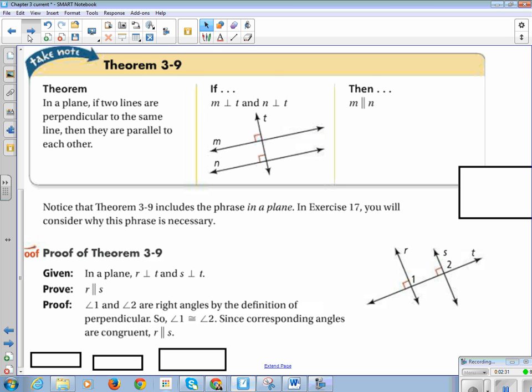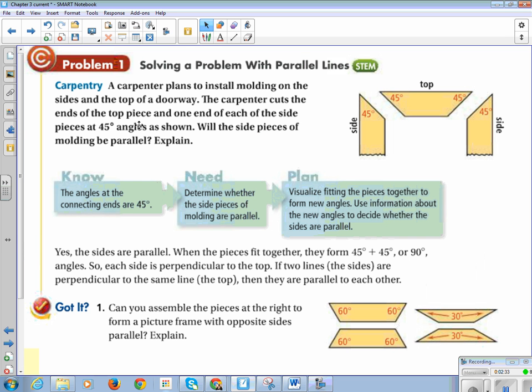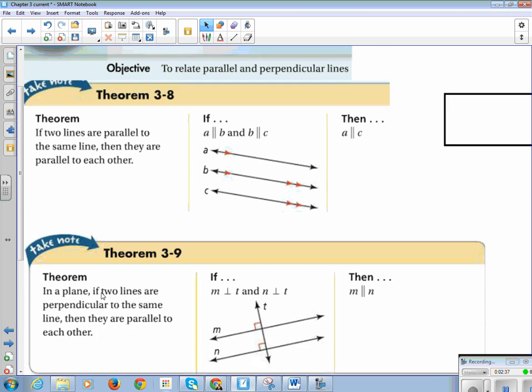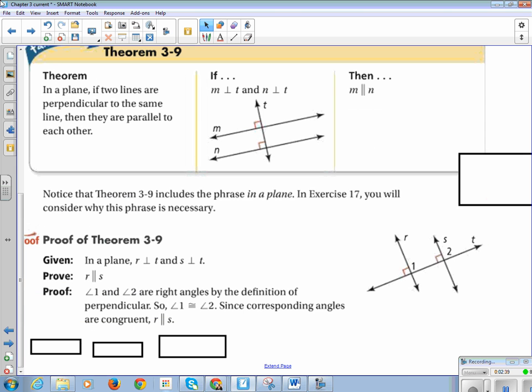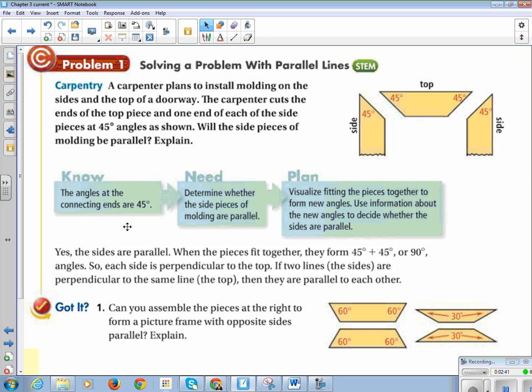All right, so let's see the application of this. Actually, I should go back and make sure I have everything underneath. So problem number one, solving a problem with parallel lines. Carpentry. A carpenter plans to install molding on the sides and the top of the doorway. The carpenter cuts the ends of the top piece and one end of each side pieces at 45 degree angles as shown.